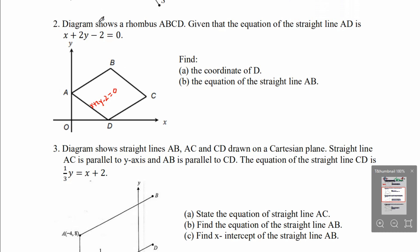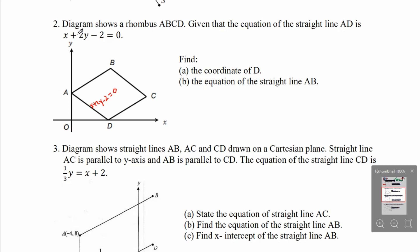Question 2. The diagram shows a rhombus ABCD. Given that the equation of the straight line AD is X plus 2Y minus 2 equals to 0. For a rhombus, AD is parallel to BC, AB is parallel to CD, and all sides are equal — AB, BC, CD, and AD are the same length. Part A: find the coordinate of D. D is on the X-axis, so it is an X-intercept, meaning the Y coordinate of D is 0.